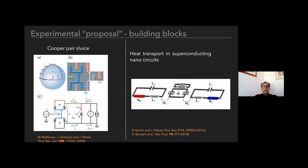I think all the components to study these effects are already present. I'm referring to the experiment in Pekola's group, because some time ago, more than 10 years ago, they did an experiment of Cooper pair pumping in which they considered what is called Cooper pair sluice—a double junction in which they could control through fluxes and gates Cooper pair pumping. At the same time, more recently they did experiments in heat transport by considering superconducting nanocircuits coupled to some LC resonators.